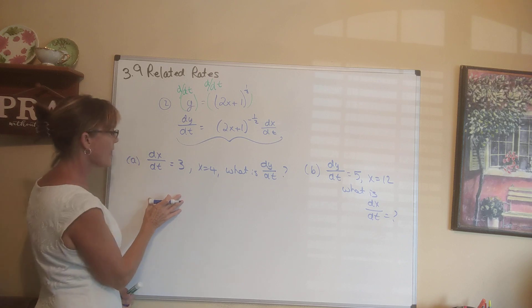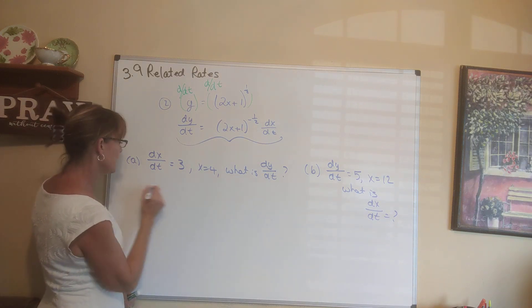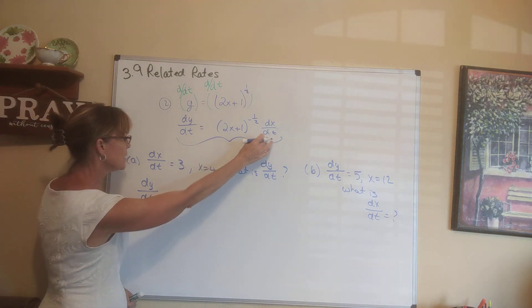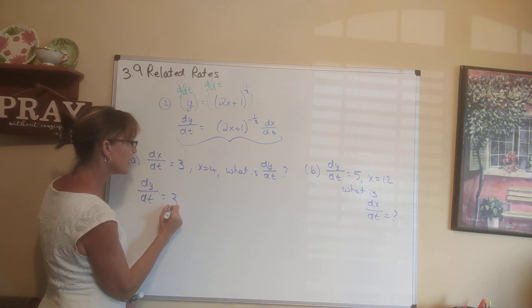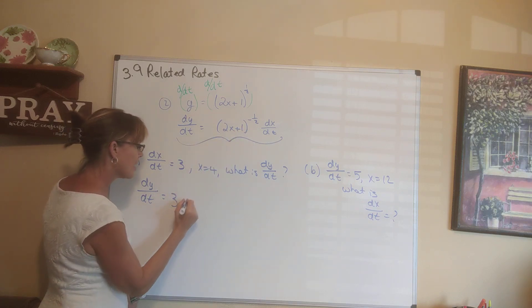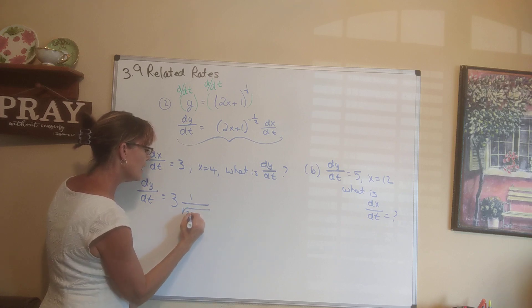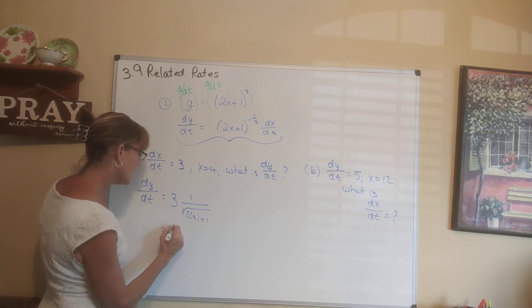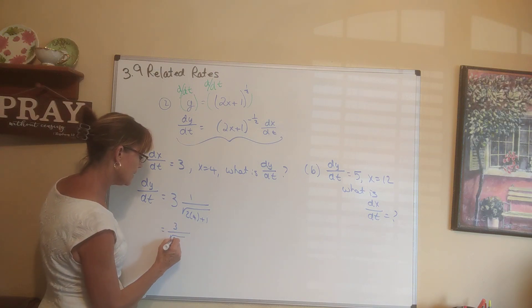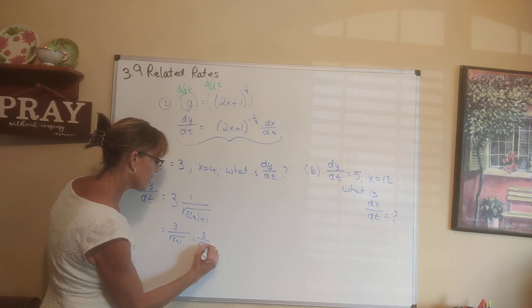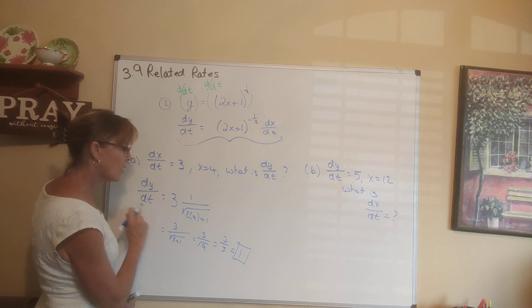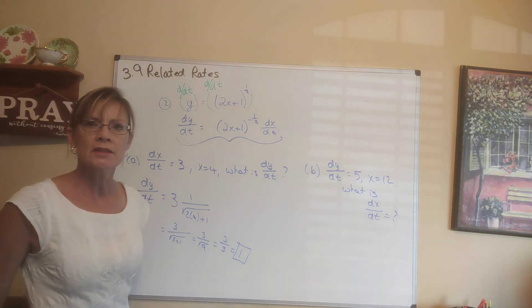For part a, we're plugging in to find dy/dt. dy/dt equals dx/dt — which is 3 — times 1 over the square root of 2x plus 1. With x equal to 4, this is 3 over the square root of 2 times 4 is 8 plus 1, which is 3 over the square root of 9, giving 3 over 3. So dy/dt equals 1. We don't have units since this was just practice using derivatives.